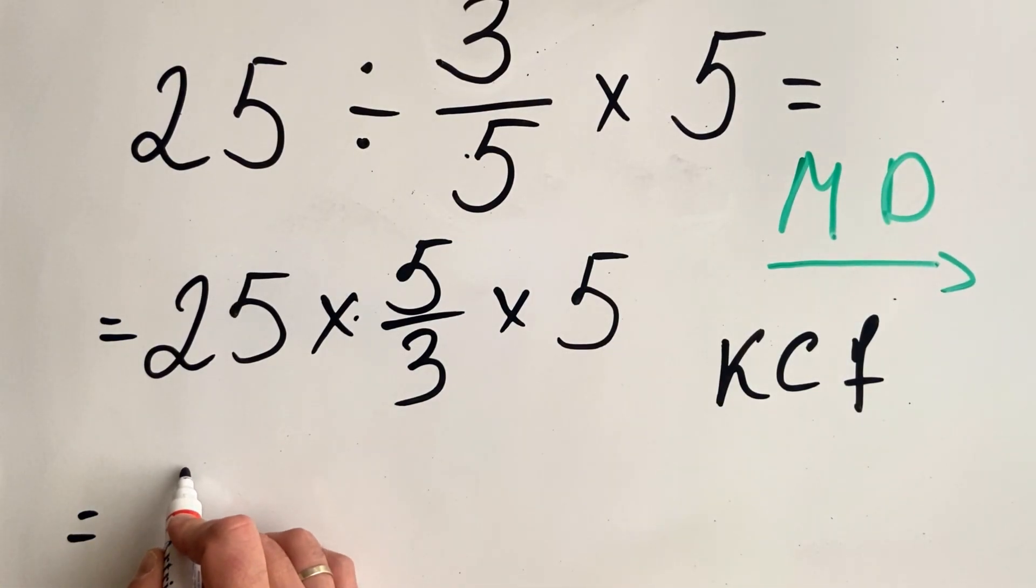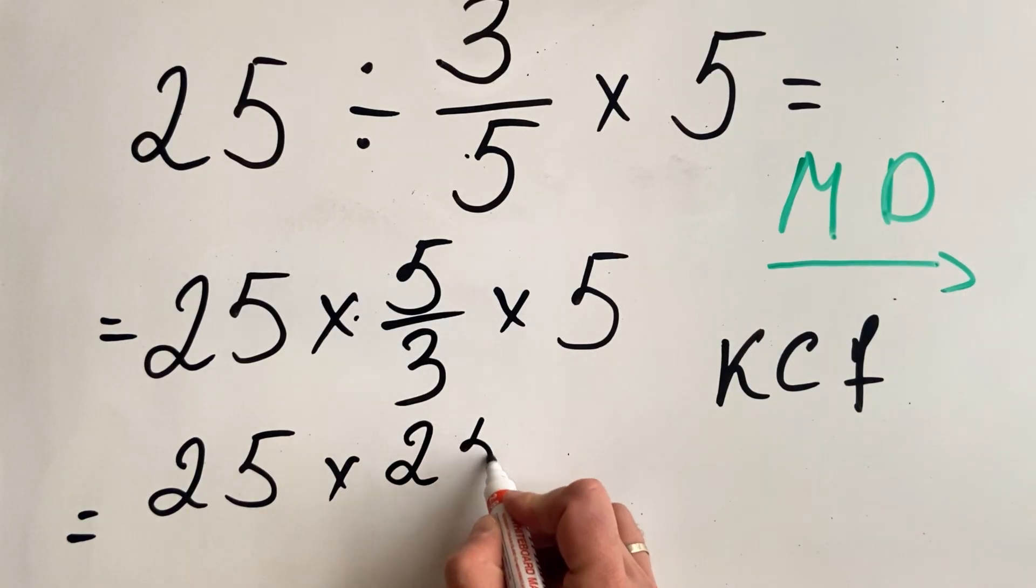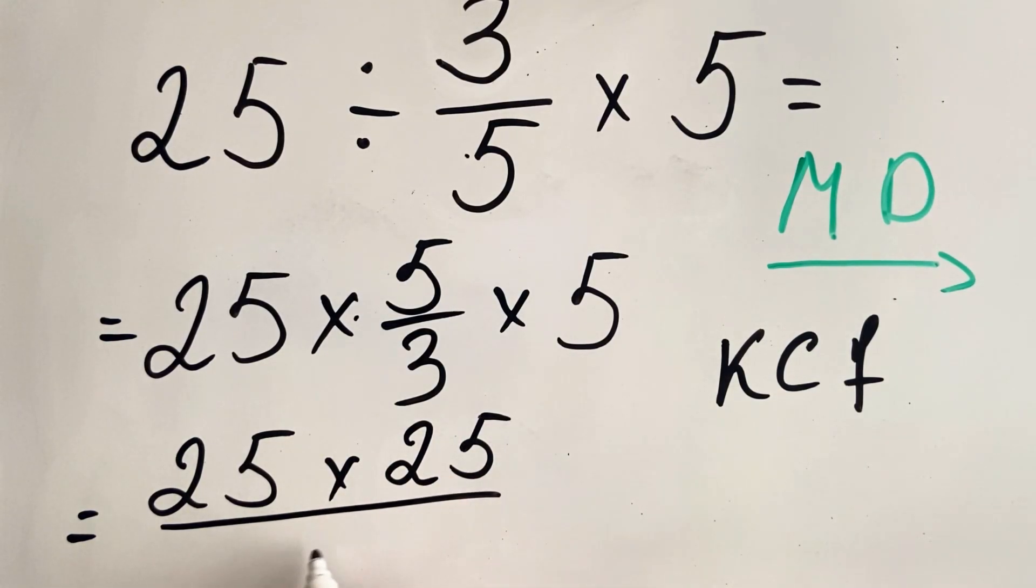So we get, we can put all to one numerator. So we have 25 multiplied by 25 over 3.